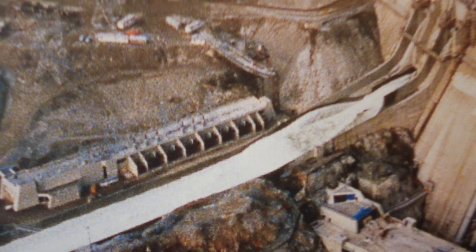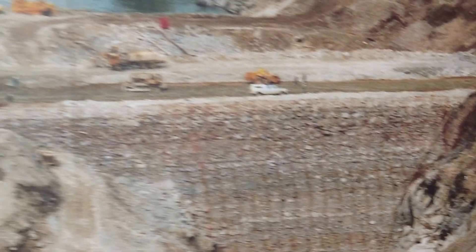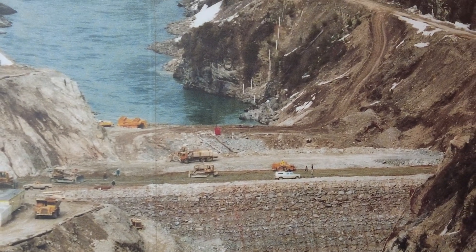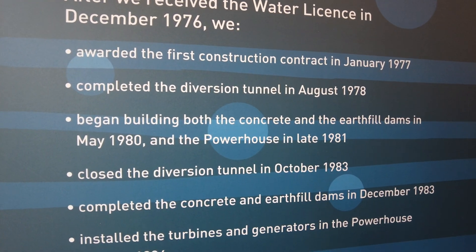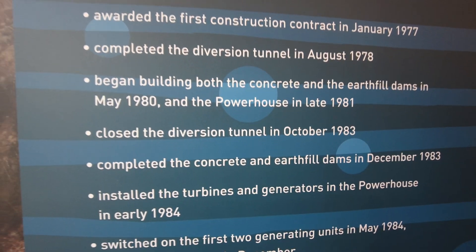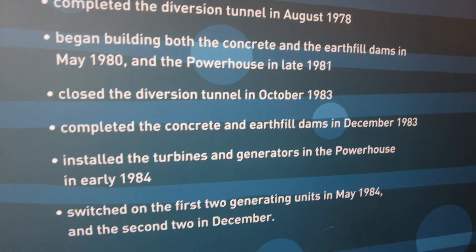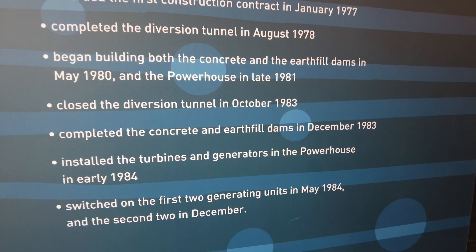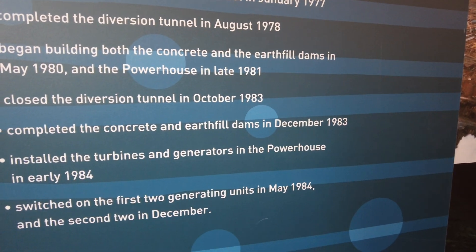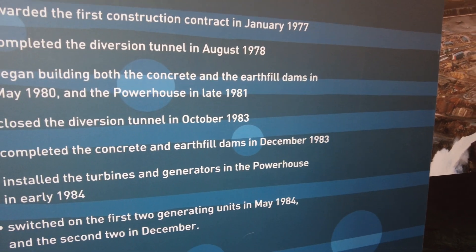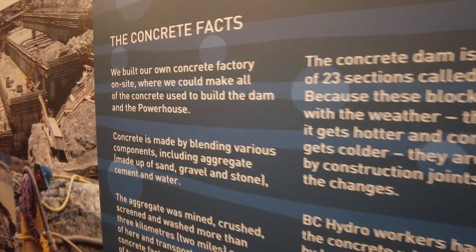Eight years of non-stop construction. After receiving the water license in December 1976, BC Hydro awarded the first construction contract in 1977, completed the diversion tunnel in '78, began building both concrete and earthfill dams in 1980, the powerhouse in '81, closed the diversion tunnel in '83, completed the concrete and earthfill dams in '83, installed the turbines and generators in early '84, and switched on the first two generating units in May 1984 and the second two in December.